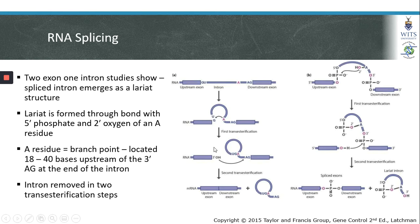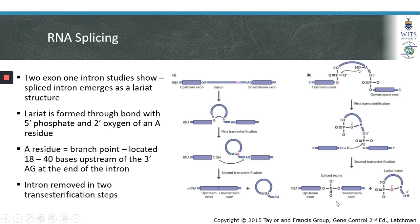The intron is removed in two transesterification steps, meaning it involves the formation of two ester bonds. The first ester bond is formed between the 5' phosphate at the G residue with the oxygen at the branch point. The second transesterification step involves the formation of an ester bond between the 3' hydroxyl group at the end of the first exon with the 5' phosphate group at the first nucleotide of the second exon, resulting in release of the lariat and the joining of the upstream and downstream exons.